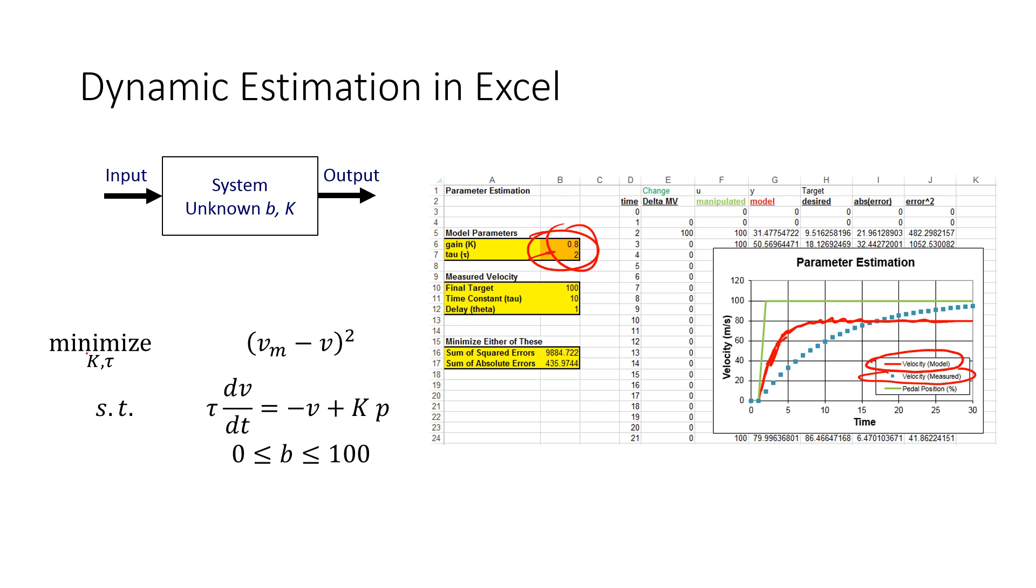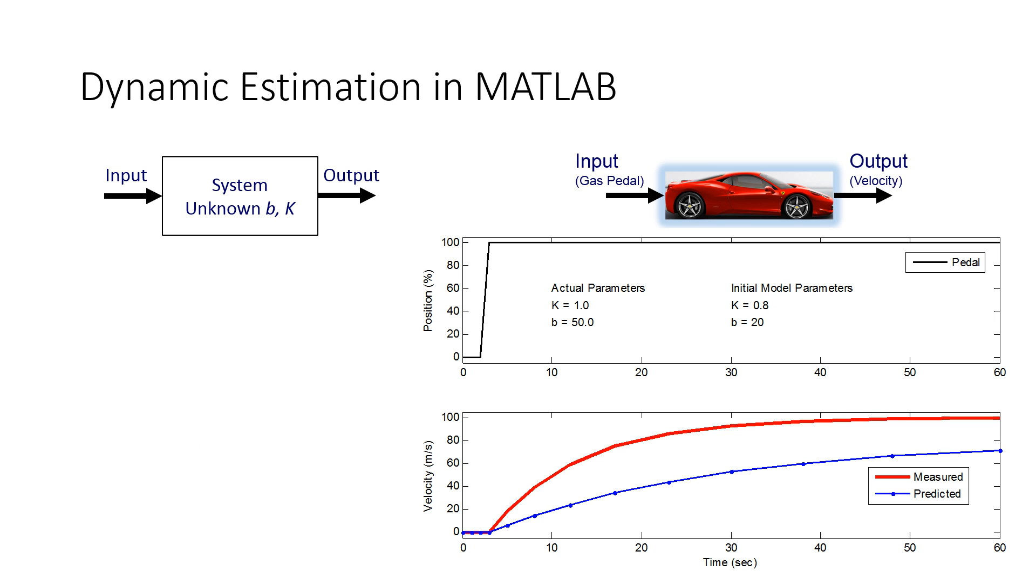So we want to try to minimize, by changing k and tau, we want to try to minimize the difference between the measured and the model value that's going to be subject to these equations.